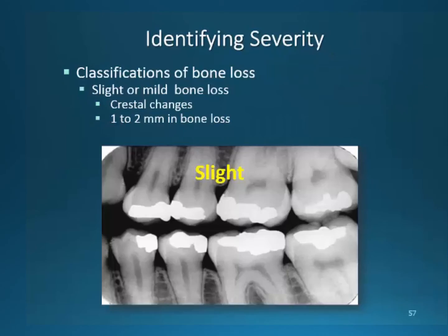We will begin defining severity. This is at the least of three classifications and the most important — we will use severity to determine the major classification of periodontal disease. Slight bone loss has very minimal bone loss changes; only 1 to 2 millimeters of crestal bone change will occur as seen in this radiograph. The slight peaks over the alveolar crest have been lost due to either bacterial infection or possibly occlusal trauma. Not all bone loss is disease related, and we will learn this in your advanced course. For our lesson, we will focus on bone loss as a disease.